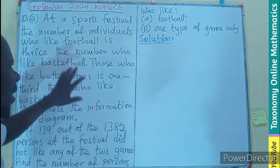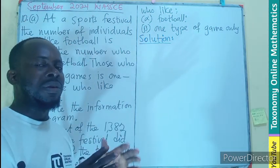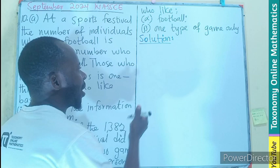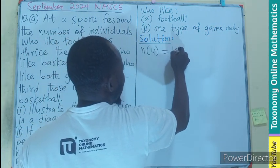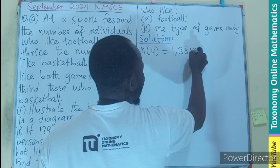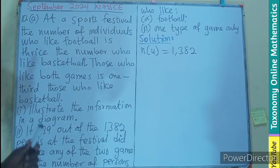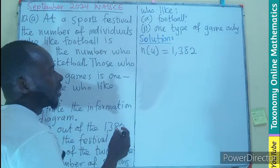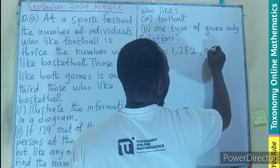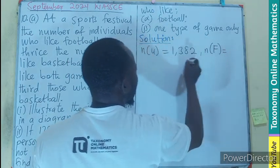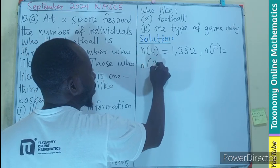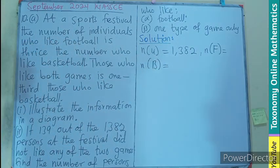This is a two-set problem, so we need to bring out the preambles from the question. We can take our universal set to be 1382. We are dealing with football and basketball. The number is not given directly, but expressed in algebraic form.